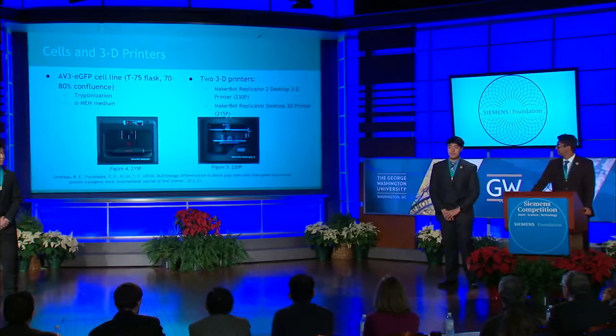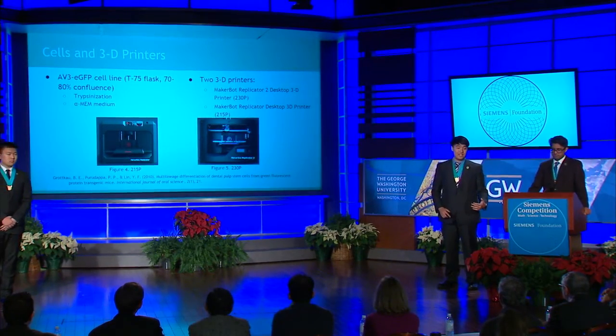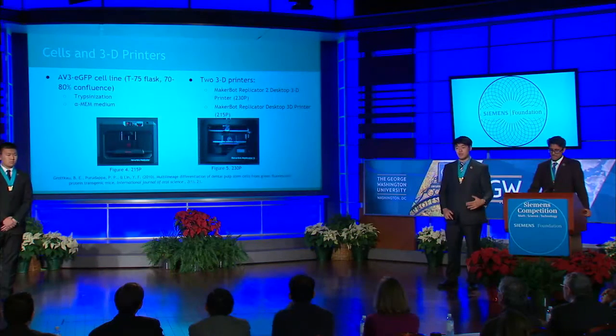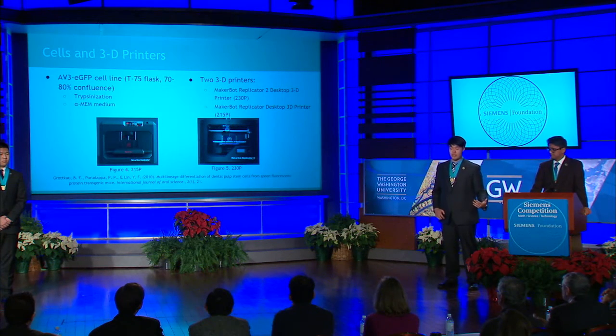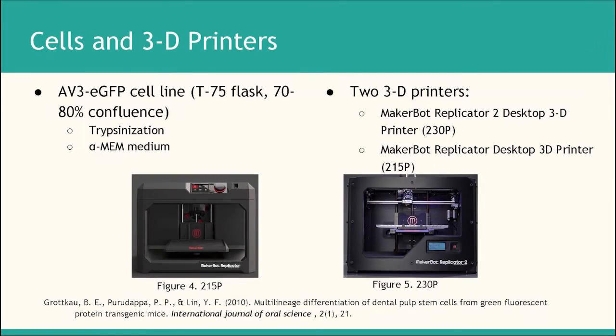The cells used for this study are the AV3-EGFP cell line. EGFP stands for Enhanced Green Fluorescent Protein, so these cells have been genetically modified to produce Enhanced Green Fluorescent Protein, causing them to light up green under the microscope. We received the cells from Stony Brook University with 70-80% confluence in a T75 flask, detached them using trypsinization, and neutralized with alpha-MEM containing fetal bovine serum.